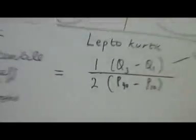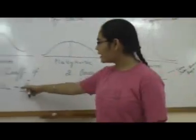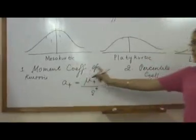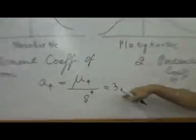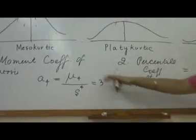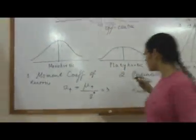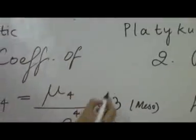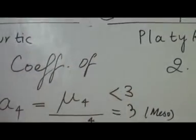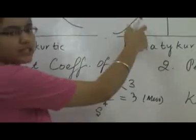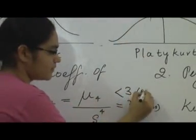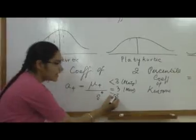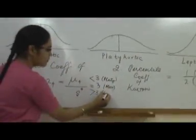Now I need to tell you about the answers. If you got an answer equal to 3 for the moment coefficient of kurtosis, this means your distribution is mesokurtic. If your answer is less than 3, your distribution is platykurtic. Whereas if your answer is greater than 3, your distribution is leptokurtic.